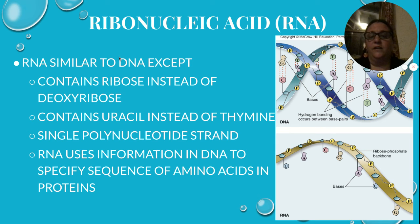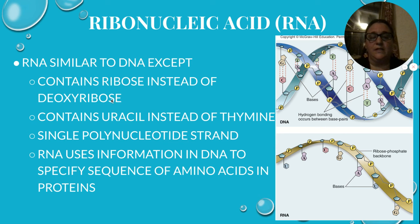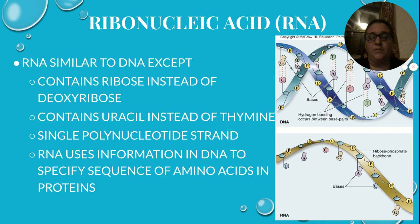When we look at RNA — ribonucleic acid — it's similar to DNA in that it's a nucleic acid made up of monomers called nucleotides, except it contains the sugar ribose instead of deoxyribose. It also contains the nucleotide uracil instead of thymine, and it is single-stranded, whereas DNA was double-stranded. RNA is the workhorse — it takes all the information from the DNA, transcribes it into amino acids, which then become proteins.